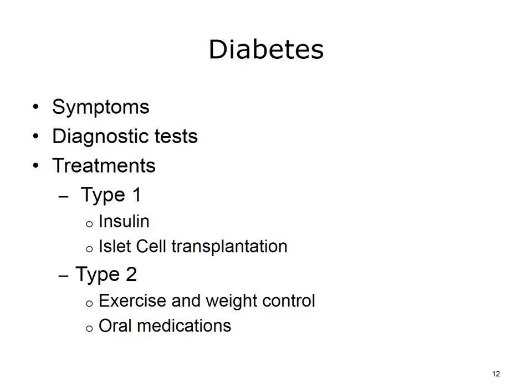Diabetes is a disorder identified when your blood glucose or blood sugar level remains above normal levels. With type 1 diabetes, your pancreas does not make insulin. Insulin is a hormone that helps glucose be absorbed into your cells to allow them to create energy. Without insulin, too much glucose stays in your blood. With this excess glucose, damage can occur to your heart, eyes, kidneys, nerves, and even the gums and teeth.